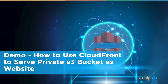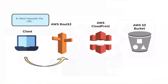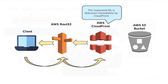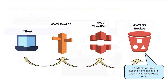Now let's look at the demo: how to use CloudFront to serve a private S3 bucket as a website. We'll run a CloudFront distribution demo on the AWS console, delivering content from a private S3 bucket and mapping it to a domain name using the Route 53 service. For this demo we need: a domain URL, Route 53, a CloudFront distribution, and a private S3 bucket.